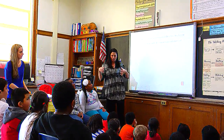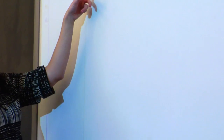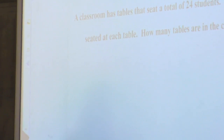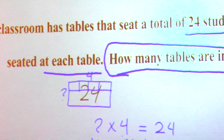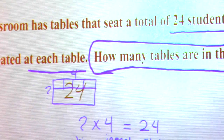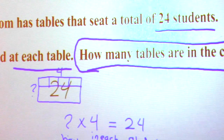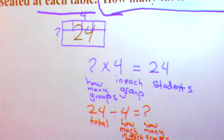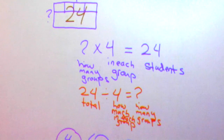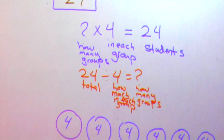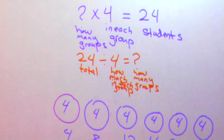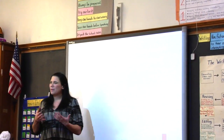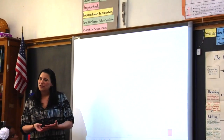A classroom has tables that seat a total of 24 students. Four students are seated at each table. The teacher has to figure out how many tables they're going to need in the classroom.